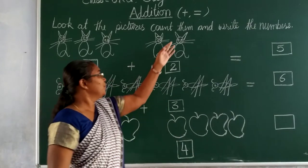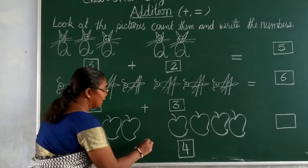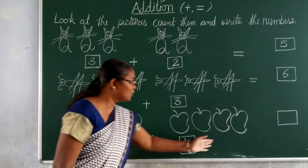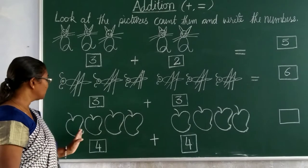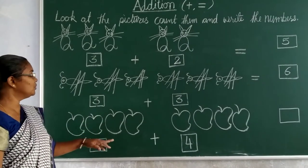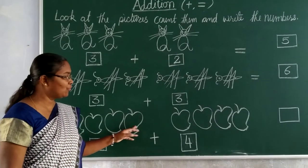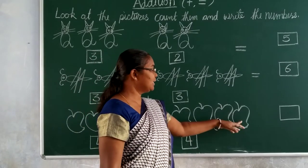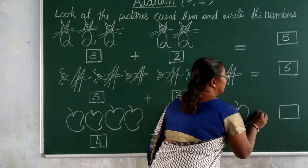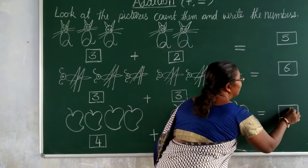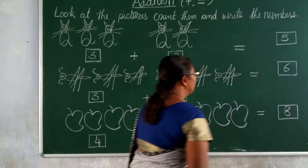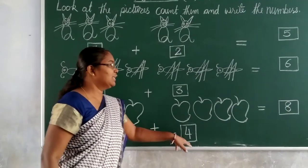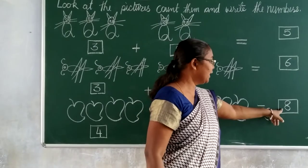So now we have to put the sign plus. Again we have to count them together. 1, 2, 3, 4, 5, 6, 7, 8. Is equal to number 8. We read 4 plus 4 is equal to 8.